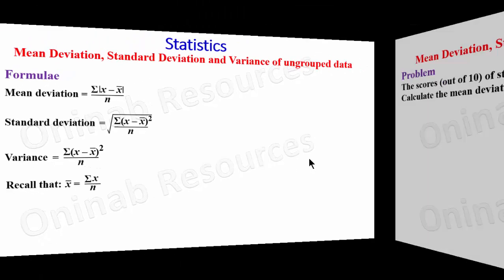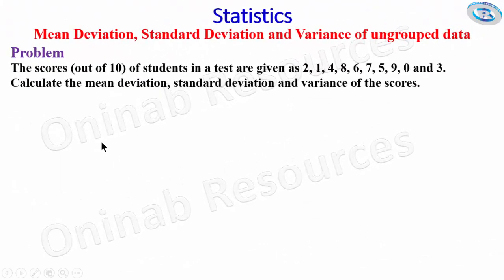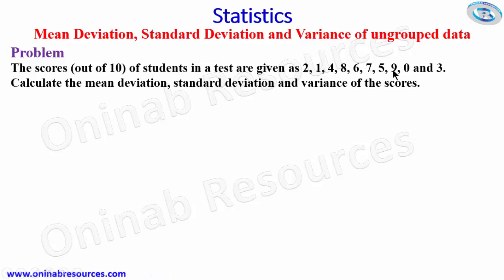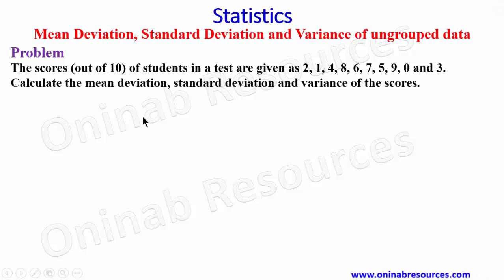Now we start with a problem. The scores out of 10 of students in a test are given as 2, 1, 4, 8, 6, 7, 5, 9, 0, and 3. Calculate the mean deviation, standard deviation, and variance of the scores.